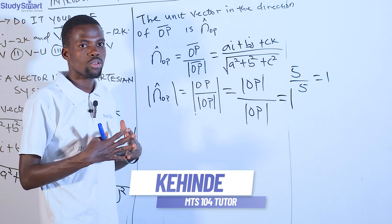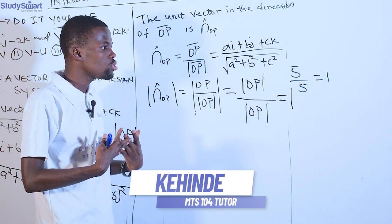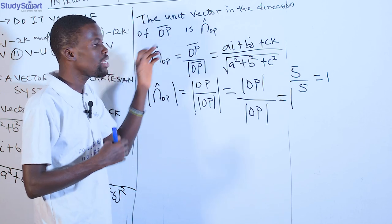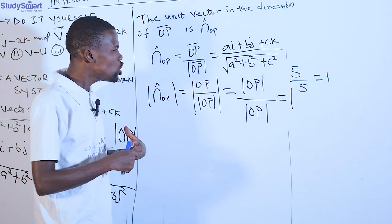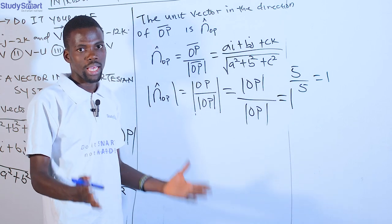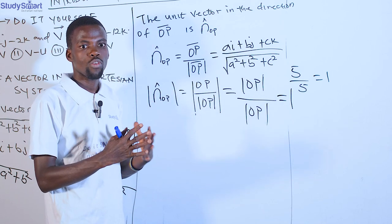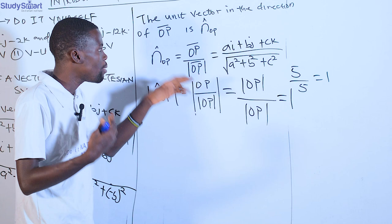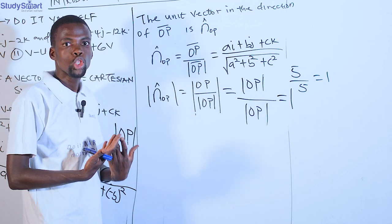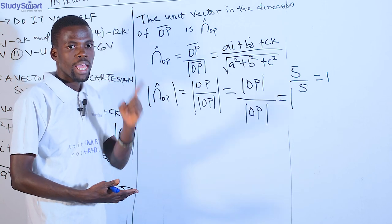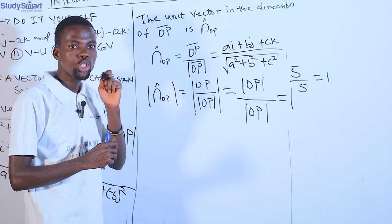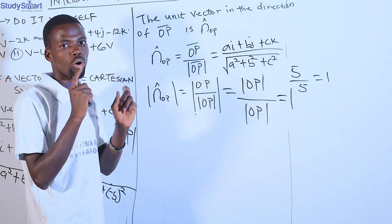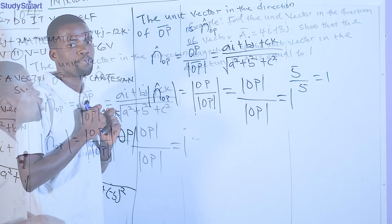Don't forget — you might see the question: what is the magnitude of a unit vector in a given direction? Anytime you see this, you don't need to find a unit vector again. You are asked to find the magnitude of the unit vector. Just know that the magnitude of any unit vector is equal to one — any unit vector will give you one.